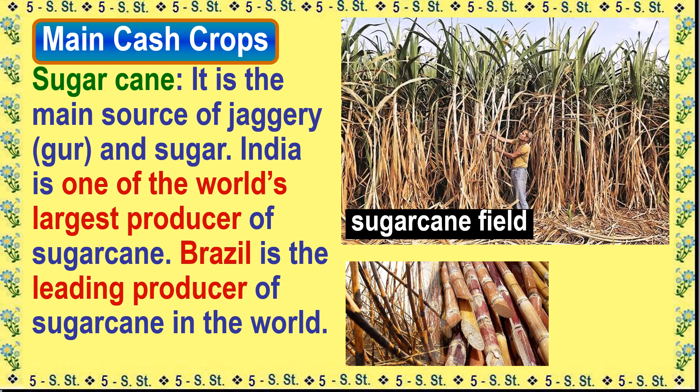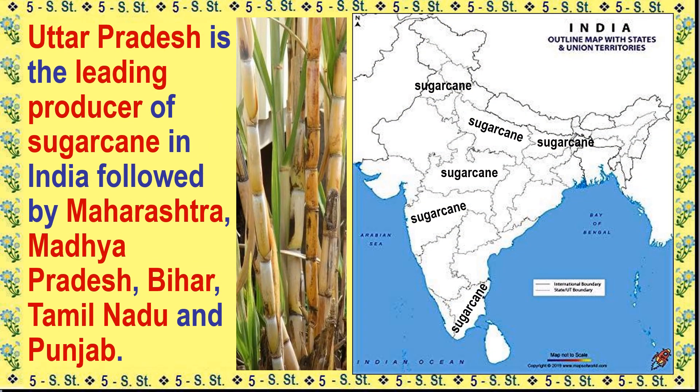Main Cash Crops: Sugarcane is the main source of jaggery, gur, and sugar. India is one of the world's largest producers of sugarcane, while Brazil is the leading producer in the world. Uttar Pradesh is the leading producer of sugarcane in India, followed by Maharashtra, Madhya Pradesh, Bihar, Tamil Nadu, and Punjab.